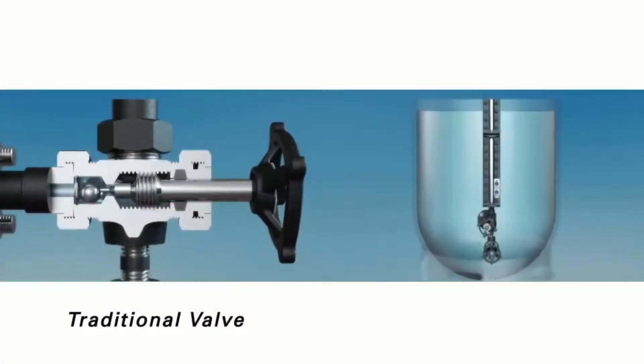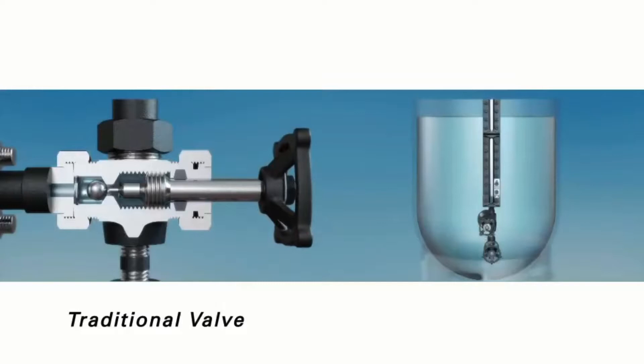When using a traditional ball check valve and commissioning a gauge assembly when there is already liquid present in the vessel, it is common for the user to open the valve too quickly, causing the ball check to engage and the level gauge to display a false level reading.